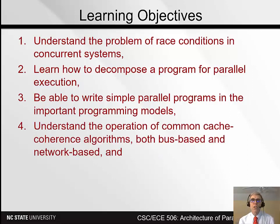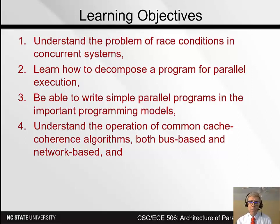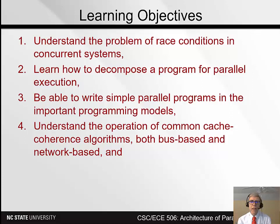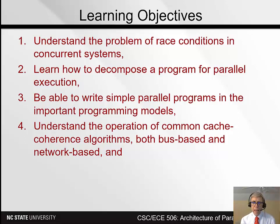Fourth, we want to understand the operation of common cache coherence protocols, both bus-based and network-based. Any architecture will put recently referenced data in a cache, which is a small, fast memory, so the processor can get it from the cache and doesn't need to go to main memory. But if you have multiple processors sharing data, that data needs to be coherent in the cache. If one processor changes a data element, that change needs to be reflected in all other processors that have it cached — and arranging that is the job of the cache coherence protocol.